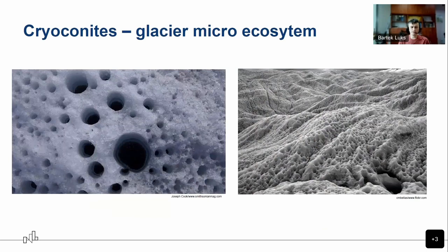Cryoconites are ecosystems and living creature communities in themselves, but they are also very important for glaciers — in a somewhat negative way. In Greenland, there's a cryoconite belt around 20-30 kilometers wide, which is an area of very intense melt. Their dark color lowers the albedo of the glacier surface, causing it to absorb more energy and melt faster.